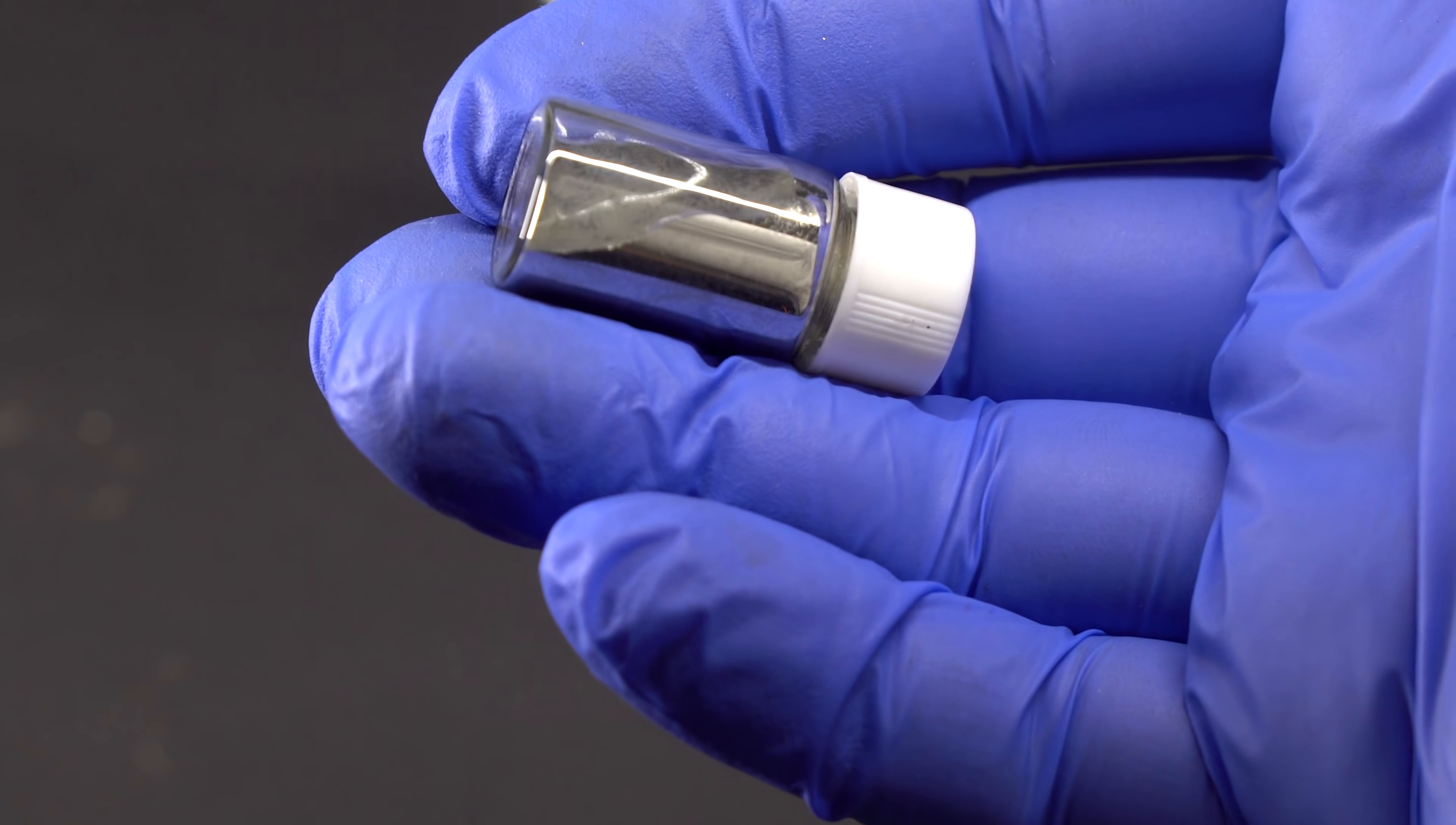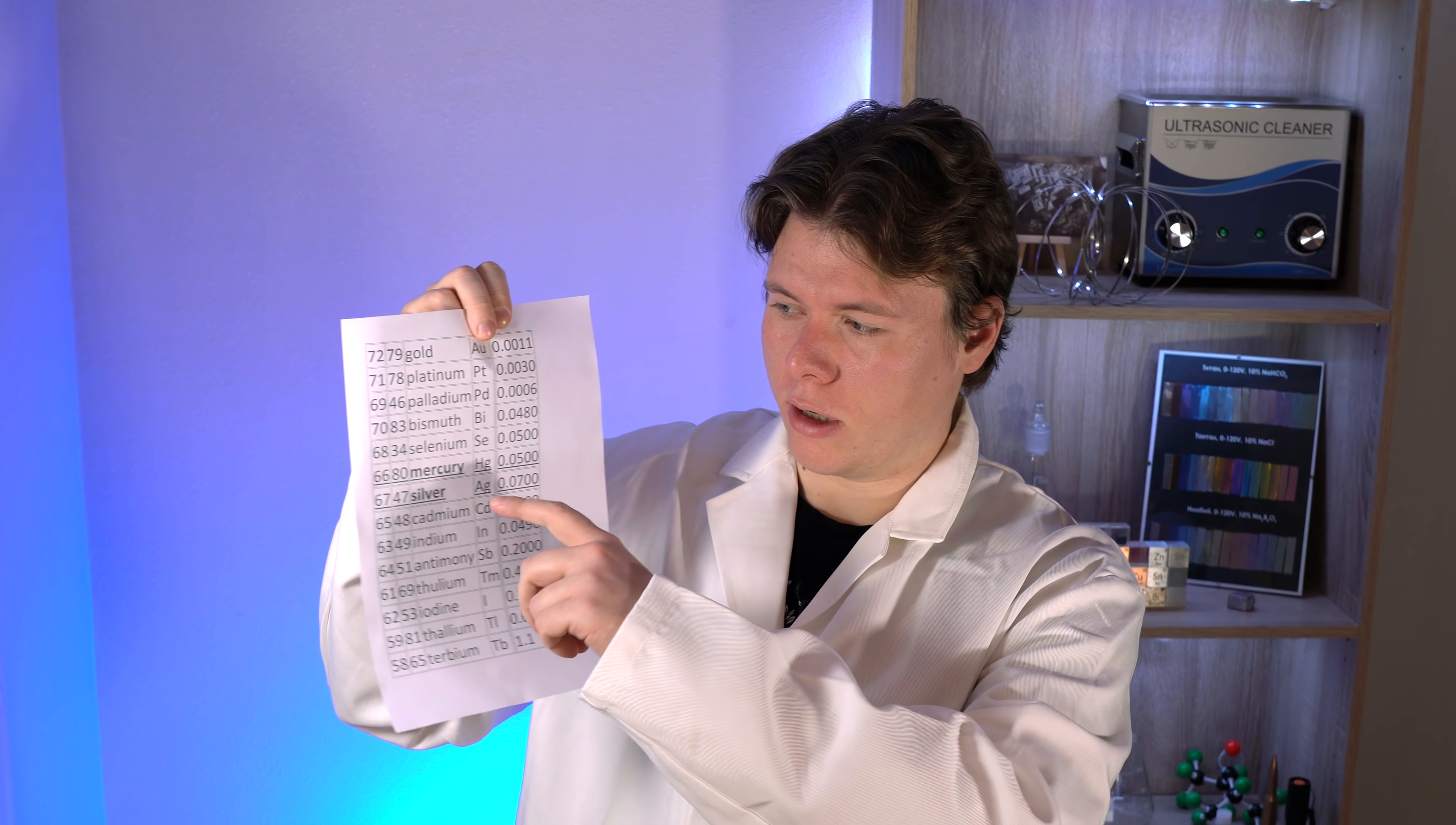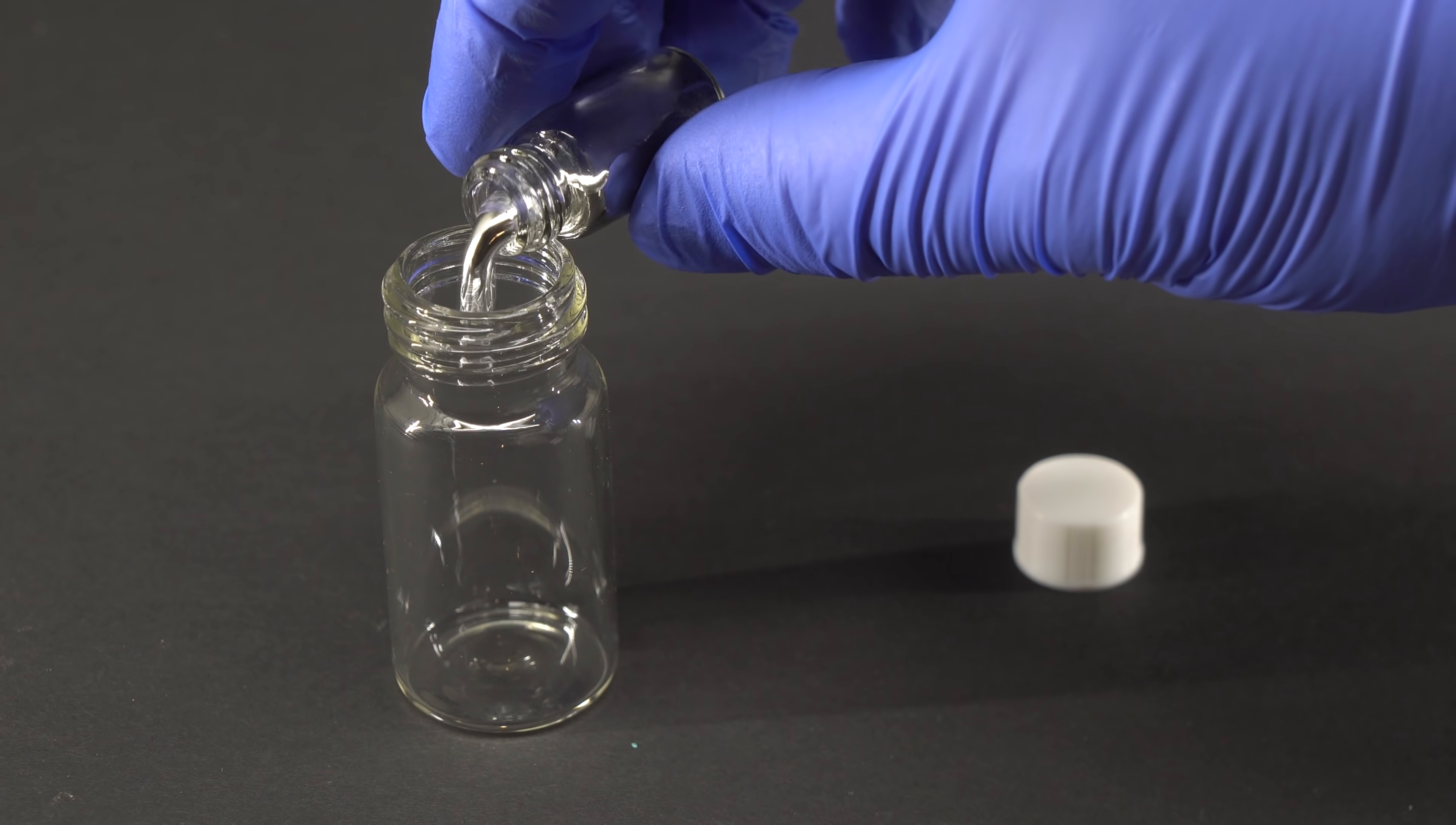This container with four grams of mercury weighs more than 50 grams and costs about 80 euros. That's why this metal is a little bit more expensive than silver. If we take a look at the table of elements abundance in Earth's crust, mercury is located next to silver.